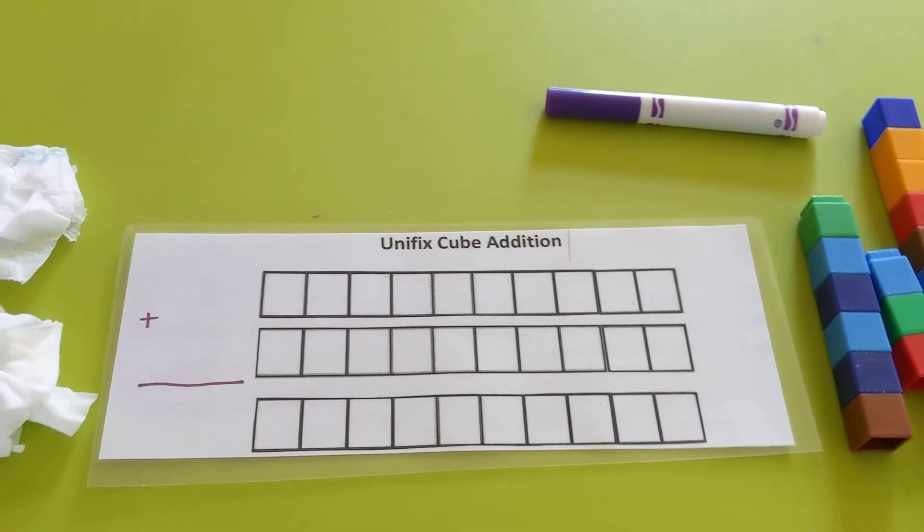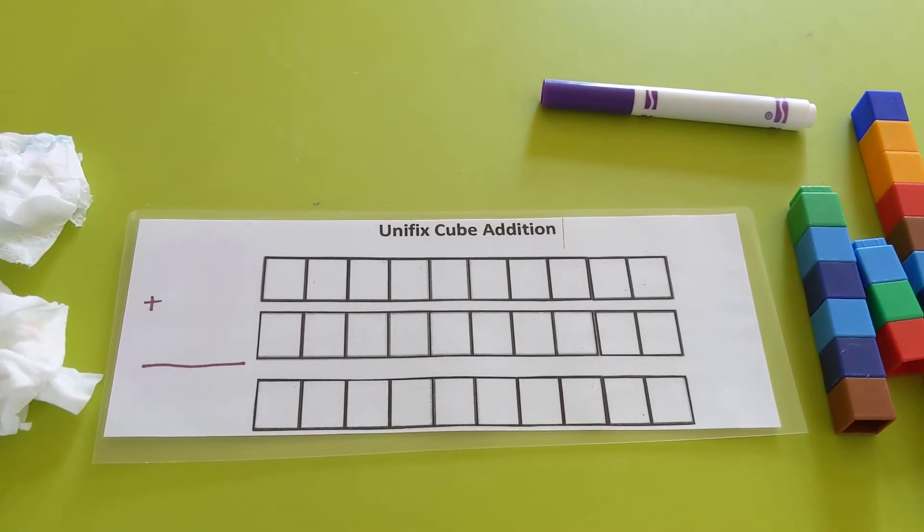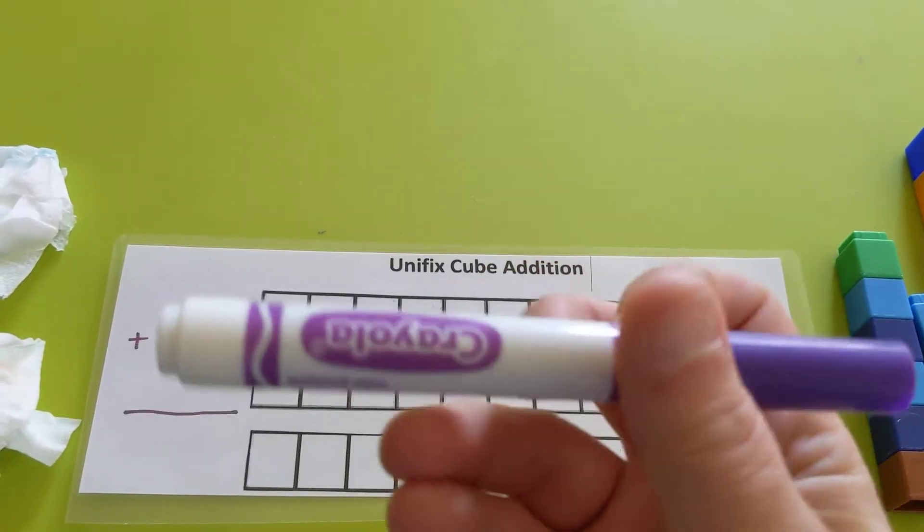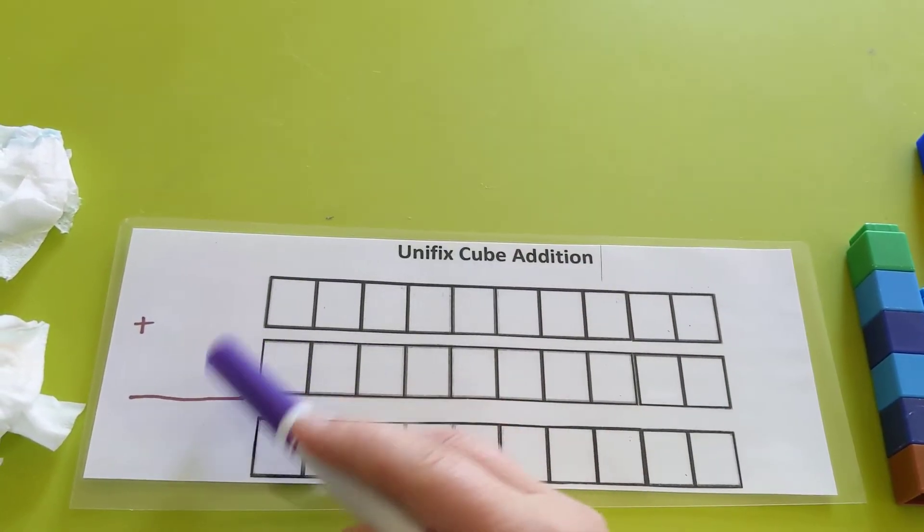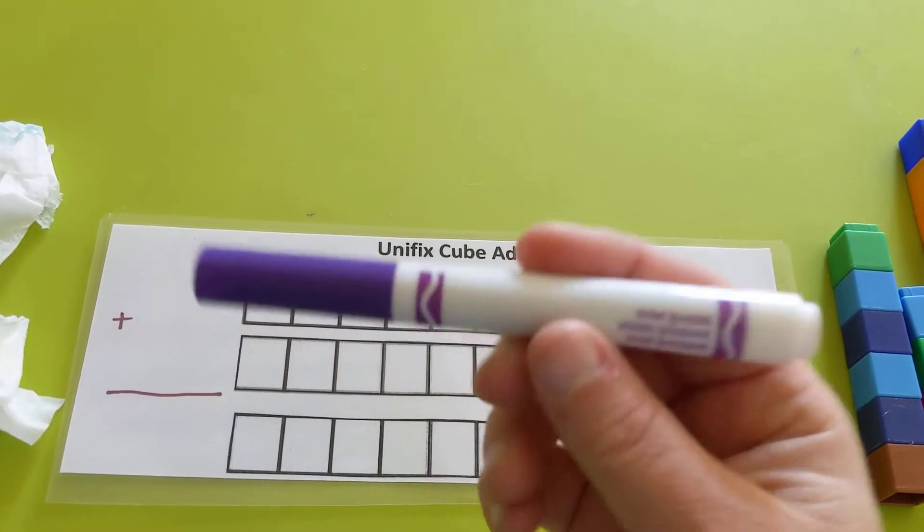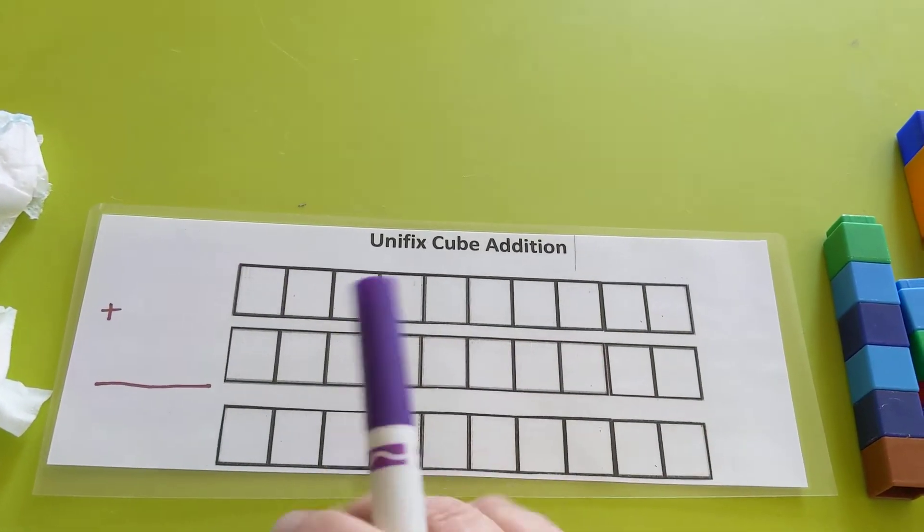So for this work, you need to do it at a table. Table is best because we're going to be using a marker. There's going to be a special marker in your packet. This is the only marker that I want you to use on here. If you use a permanent marker, it won't erase. Okay, so this marker that I'm putting in your packet is for this work.